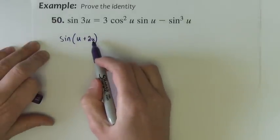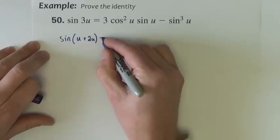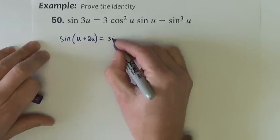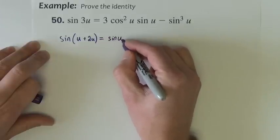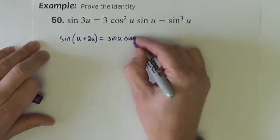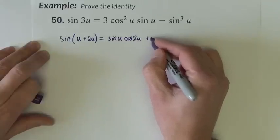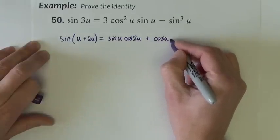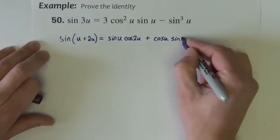Sine of 3u is the same as sine of u plus 2u. If I write 3u as u plus 2u, then I can expand it with our sine formula, which is sine of the first, cosine of the second, plus cosine of the first, sine of the second.